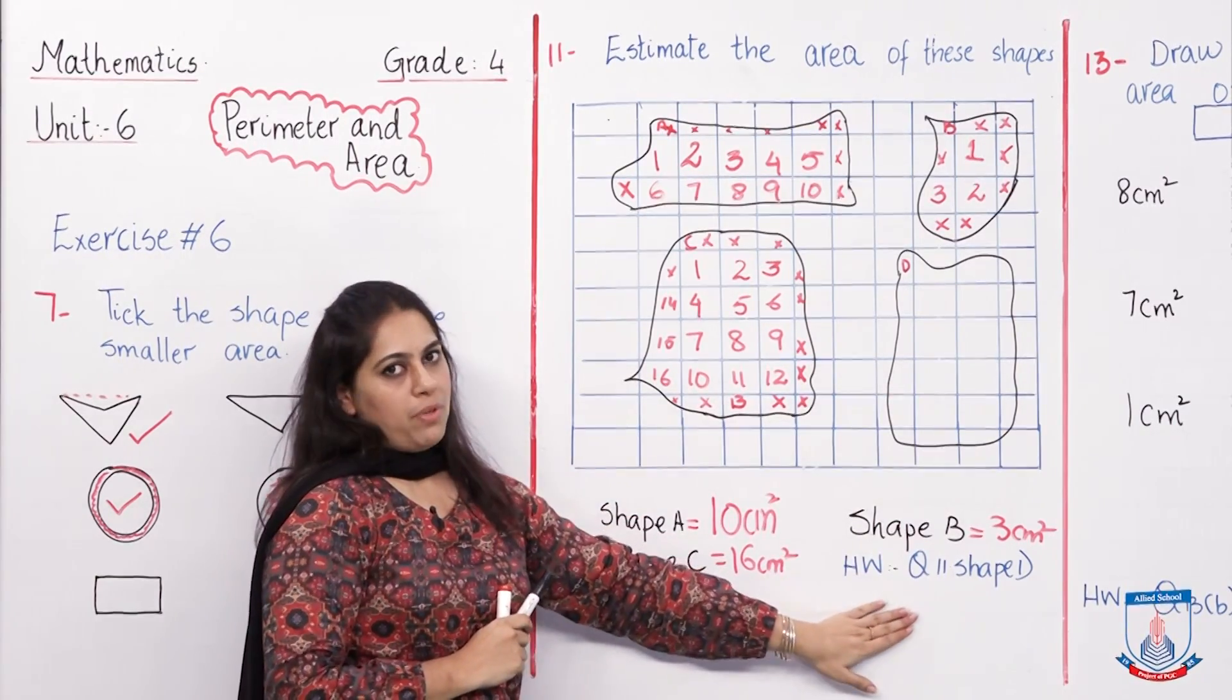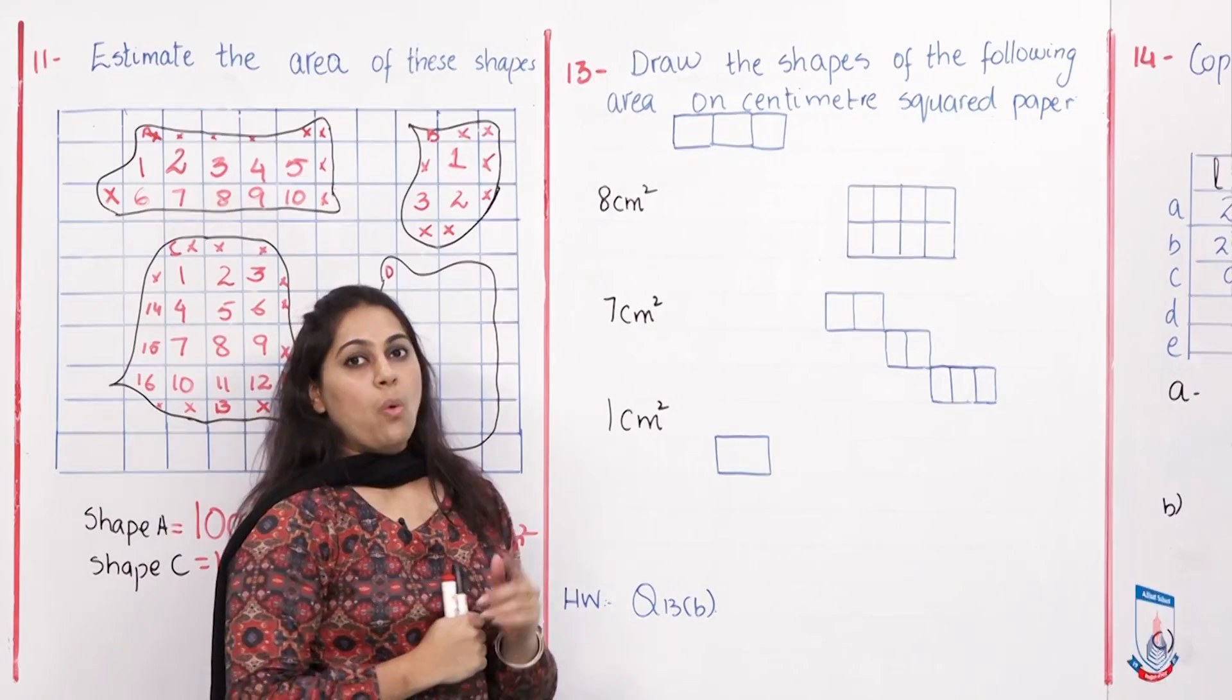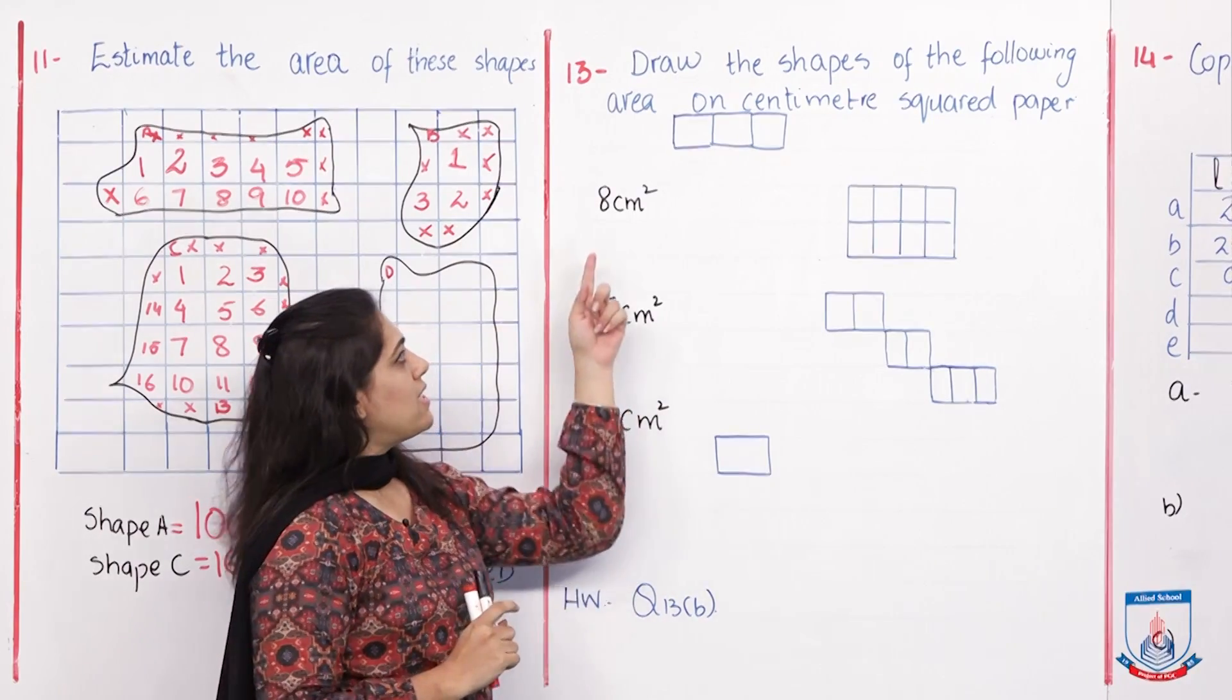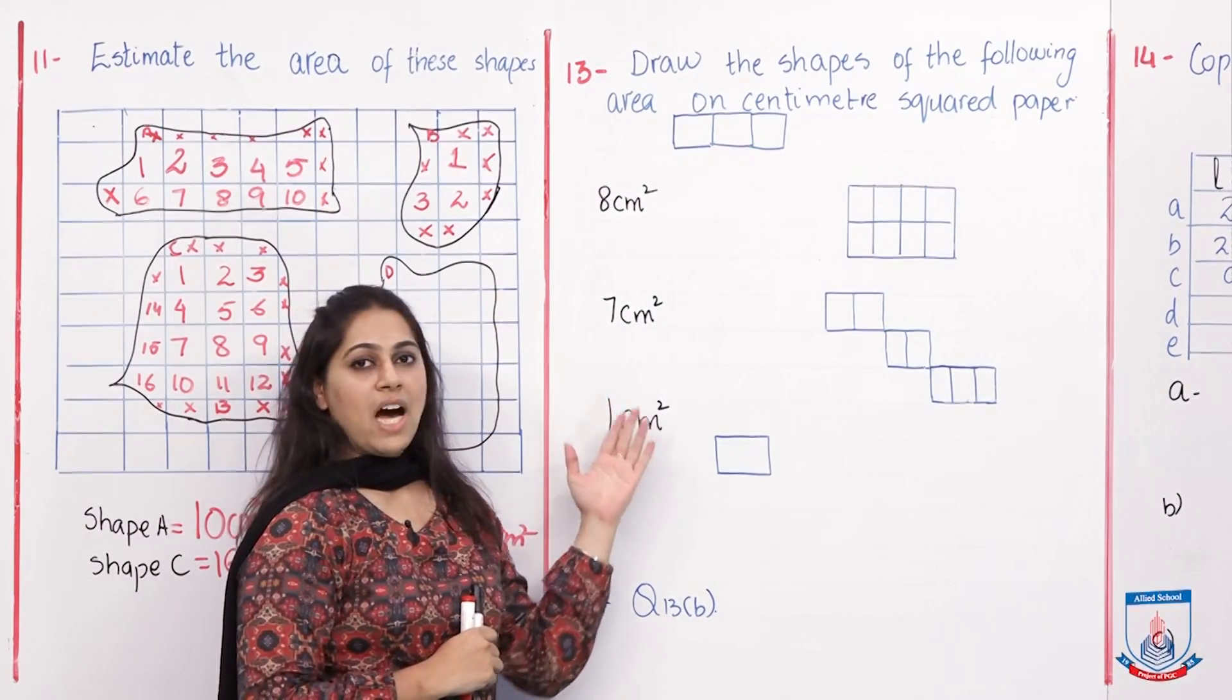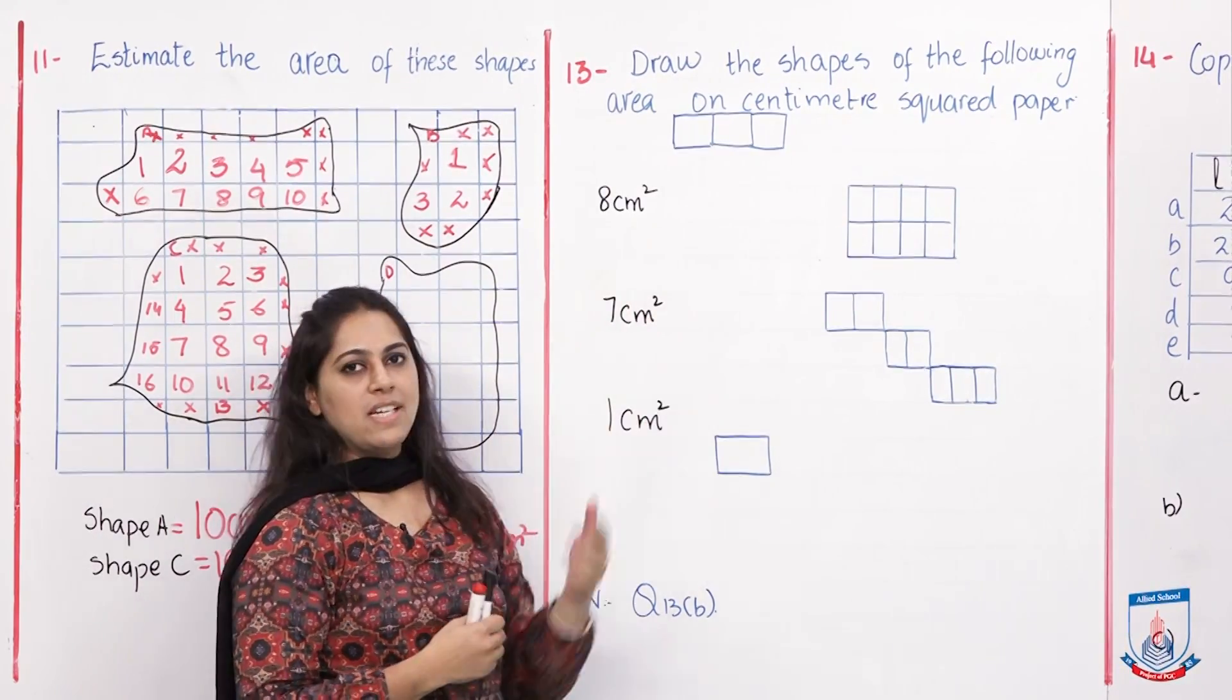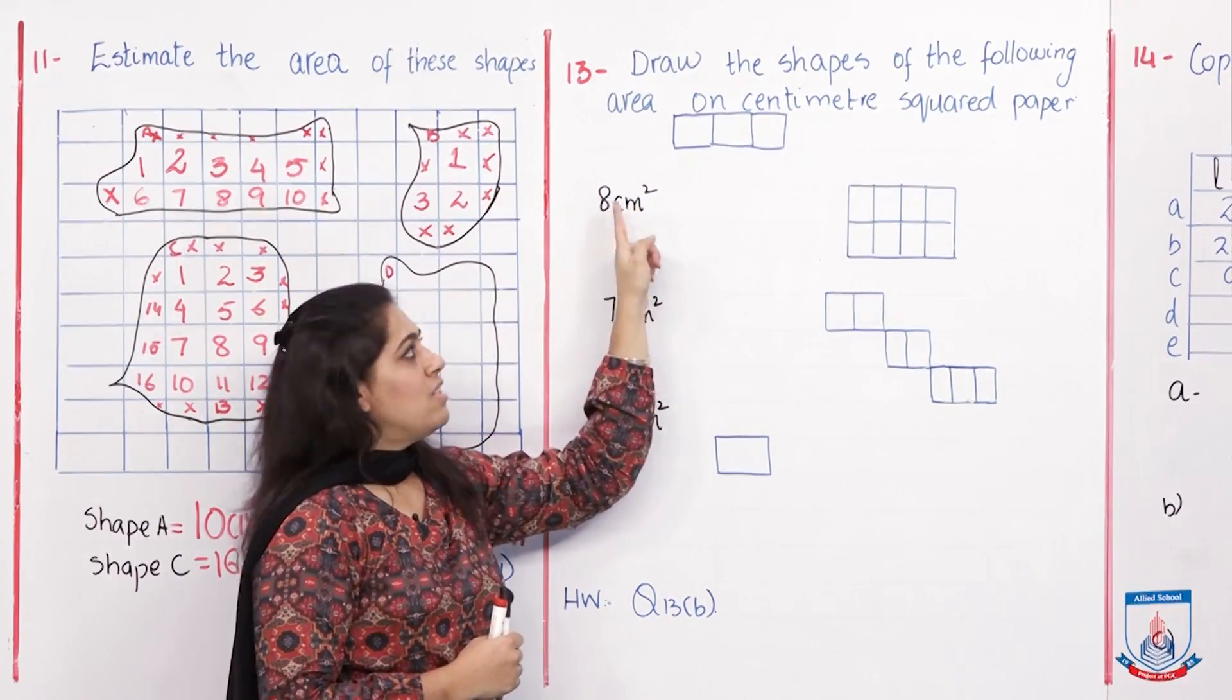Let us look at question number 13. In question number 13, it says draw the shape of the following area on centimeter squared paper. For 8 centimeter square, I am going to make this shape. You can count them as 1, 2, 3, 4, 5, 6, 7, 8. So this shape has an area of 8 centimeter squared paper.